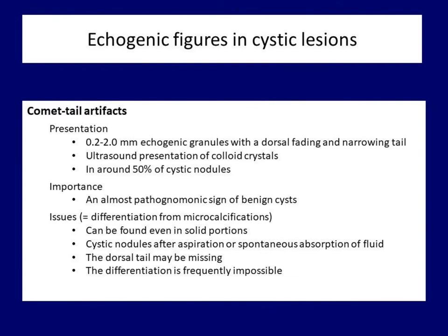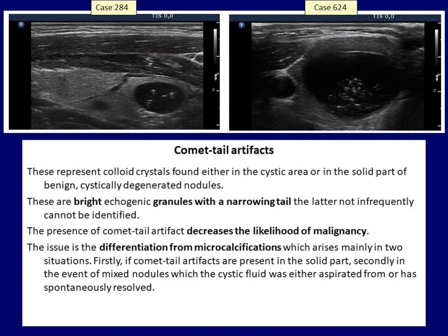In the next part of the topic, I will discuss two intranodular echogenic figures related to cystic degeneration. You can pause the video to read the description. Typical comet tail artifacts are presented in these images. These colloid crystals are usually found in the cystic part of benign nodules. These bright granules have a dorsal narrowing tail; however, the tail is lacking in almost half of cases.